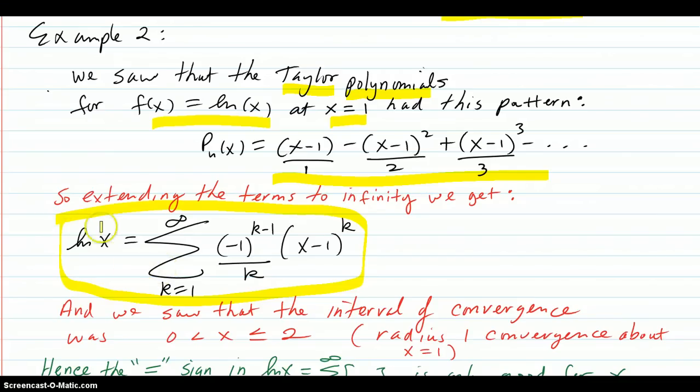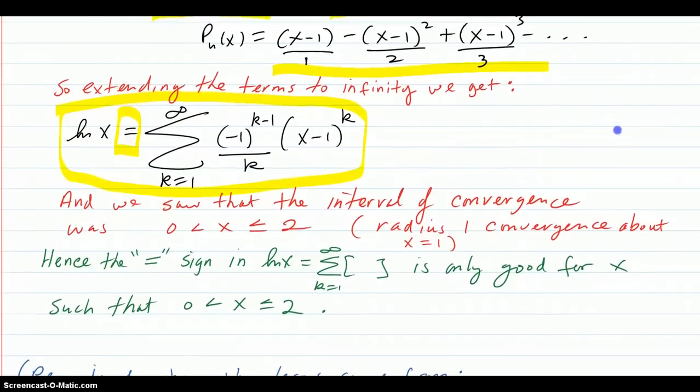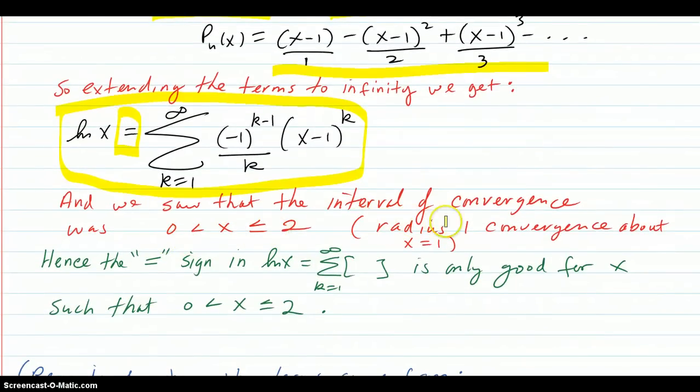But we can't just go around saying this is equal, and we'll have to find out what x values it's equal for. So we saw that the interval of convergence was zero less than x less than or equal to two. The radius of convergence was one. Hence, the equal sign in the log x equals series is only good for x such that x is in this interval: zero less than x less than or equal to two.